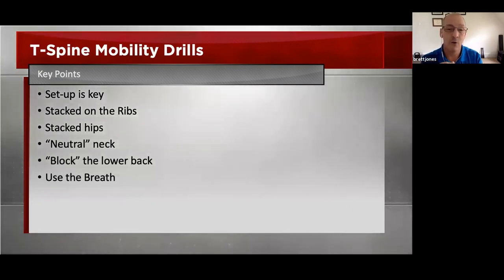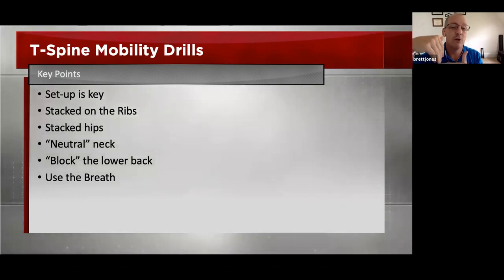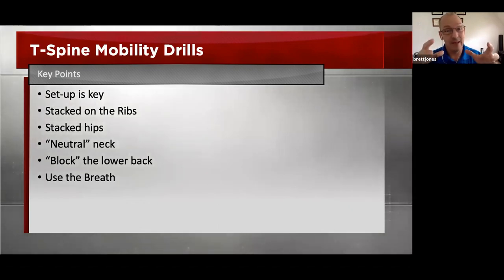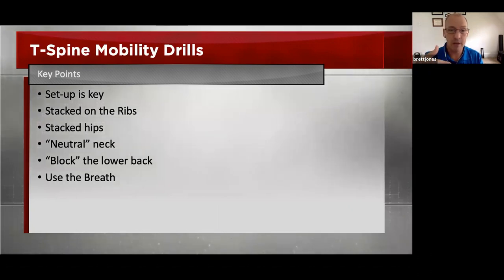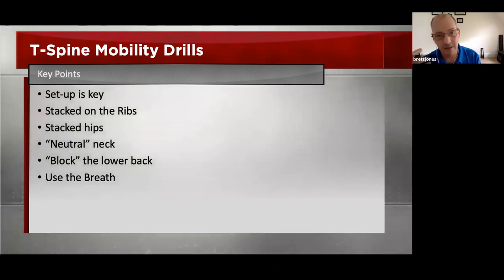We can bring something in to block the lower back — that could be a foam roller, a chair, a doorway, a large pet, a small child, whatever you happen to have access to. We're going to set something at the top of the pelvis but below the floating ribs to make sure you're not turning from your lumbar spine. When people begin their T-Spine mobility drills, they often bring a lot of muscle to it and try to turn, which blocks up the T-Spine and causes them to turn more from the TL junction or lumbar spine. Bringing in a foam roller or chair at the top of the pelvis but below the floating ribs lets us block the lumbar spine so the rotation spirals above that point, not down into the lumbar spine.